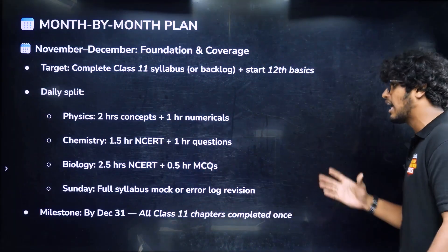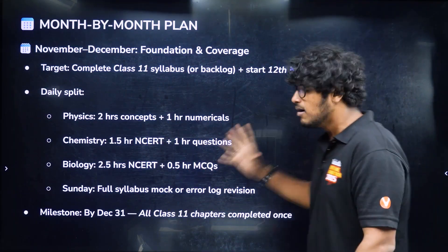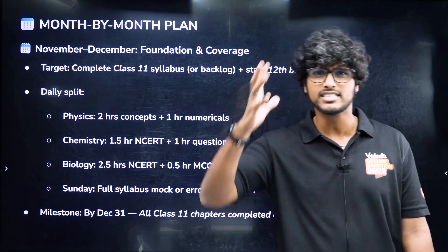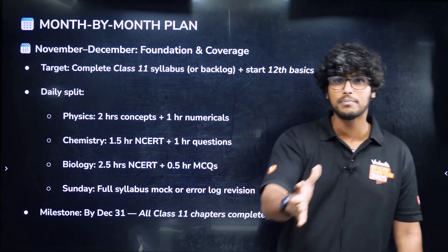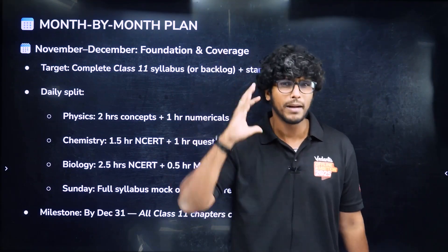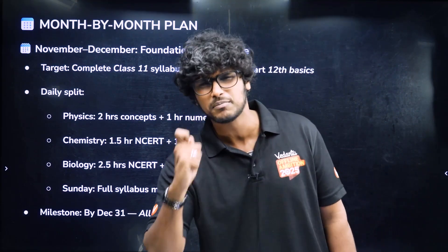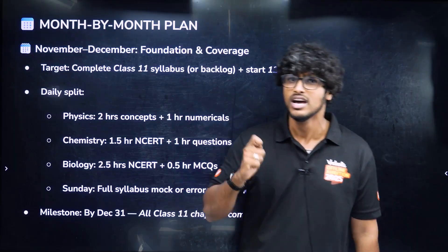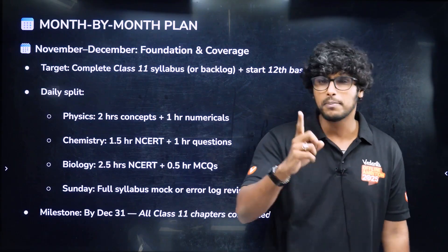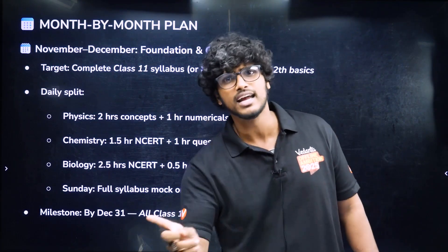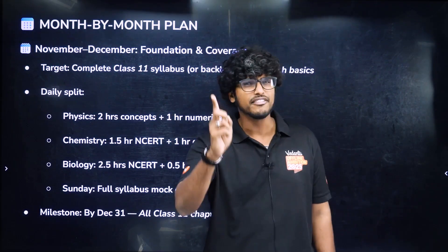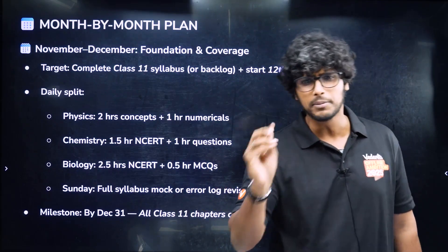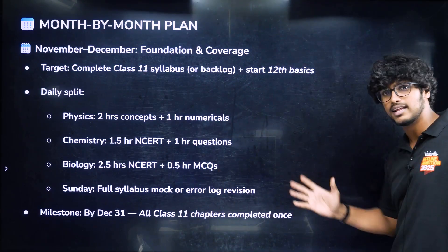Chemistry: one hour of NCRT plus one R questions. Biology: NCRT is the base — you will be able to study it fully. You should not be a passive reading process — you should actively study it. Use properly color-coded highlights: example is one color, scientific name is one color. It will be easier to study.